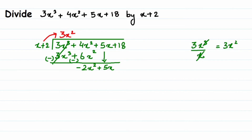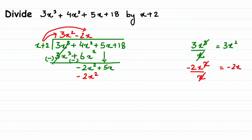Now find the next quotient term. The first term of the new dividend is minus 2x squared. Divide minus 2x squared by x — take the sign along — cancel x and x to get minus 2x. Write down minus 2x in the quotient. Multiply x plus 2 by minus 2x: x times minus 2x is minus 2x squared, and 2 times minus 2x is minus 4x. Change the signs: minus becomes plus for both. The first terms cancel, and 5x plus 4x is 9x. Drop the 18 to get plus 18.